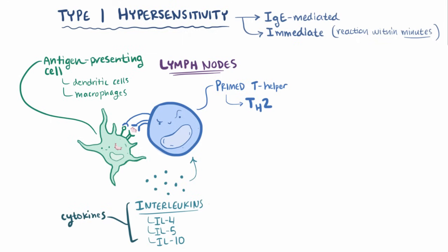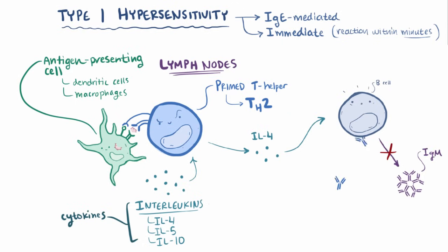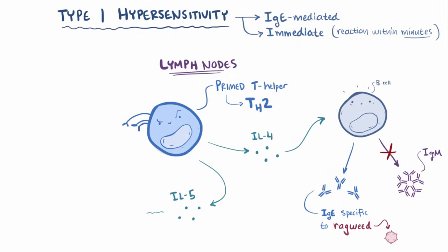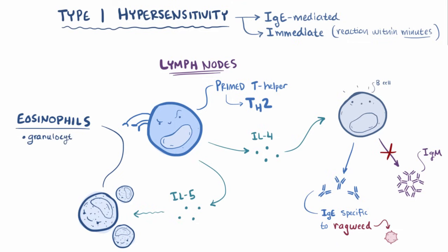At any rate, the excited TH2 cells release a bit of their own interleukin 4, and get the B cells to undergo antibody class switching, and so the B cell switches from making IgM antibodies to making IgE antibodies, which are specific to that ragweed pollen in our example. TH2 cells also release some interleukin 5, which stimulates production and activation of eosinophils, a granulocyte, which is a type of white blood cell that degranulates, or essentially releases a whole bunch of toxic substances that can damage both invading cells and nearby host cells.